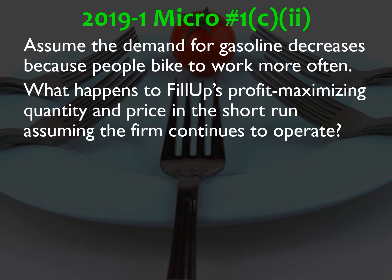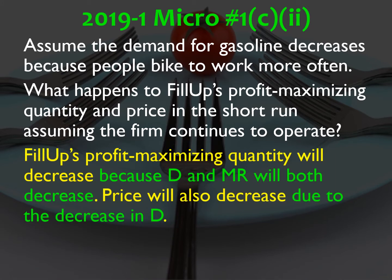Assume the demand for gas decreases because people bike to work more often — what happens to Phillip's profit maximizing quantity and price in the short run, assuming the firm continues to operate? The profit maximizing quantity is going to decrease. Because demand decreases, and the monopoly's demand curve is the market demand curve, marginal revenue will also decrease. Since quantity decreases due to the lower MR, the price will also go down because it's a lower spot on the demand curve.